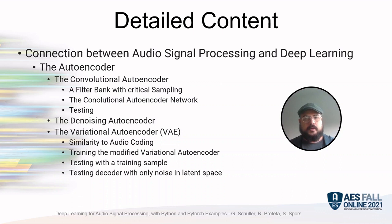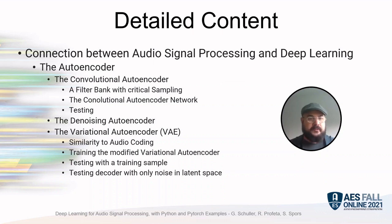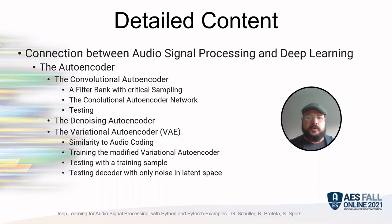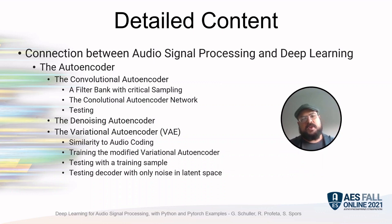Next, we cover the autoencoder — specifically the convolutional autoencoder and its relations to a filter bank with free critical sampling. We talk about the convolutional autoencoder network, its training and testing, then move on to the denoising autoencoder.